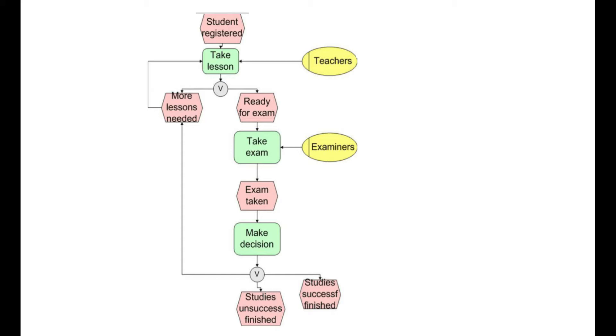In fact there are three alternatives here so we get an XOR split with three sub processes. The rightmost one is the successful case where the student succeeds in the exam and finishes her studies. The two other ones are the fail cases. The one at the bottom represents the case where the student fails the exam and she gives up. That is she finishes the studies without having passed the test.